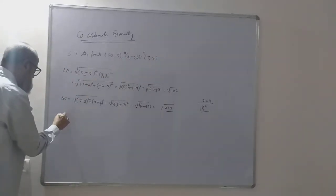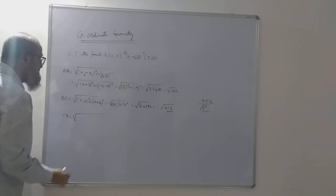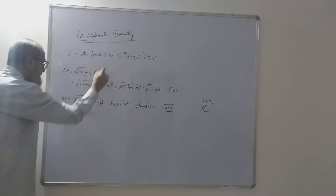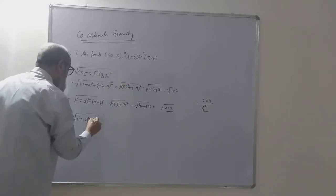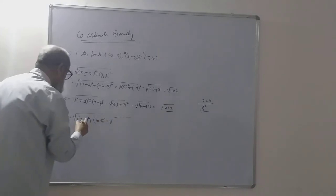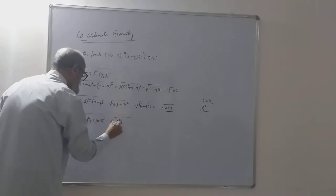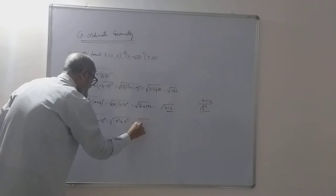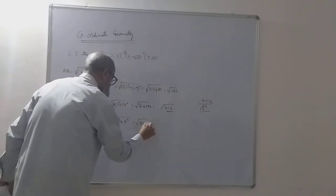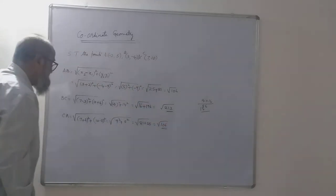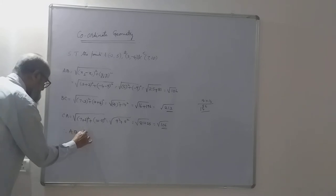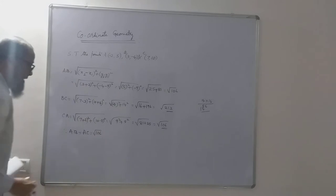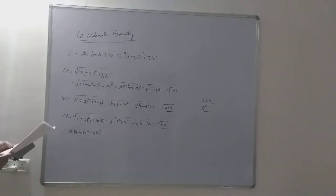Now CA: using the same formula, x2 = 7, x1 = -2, so 7 + 2 = 9; y2 = 10, y1 = 5, so 10 - 5 = 5. CA = √(81 + 25) = √106. You can see that AB = AC = √106, so two sides are equal. Therefore the given points are the vertices of an isosceles triangle.